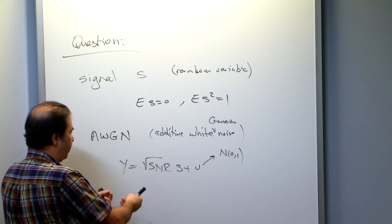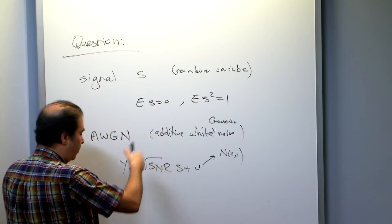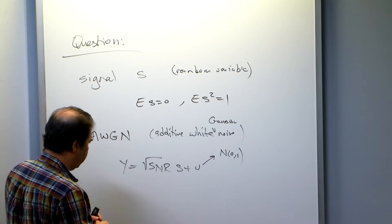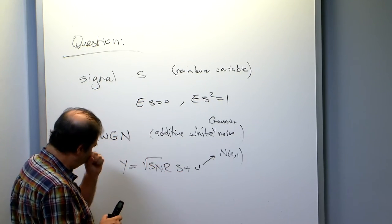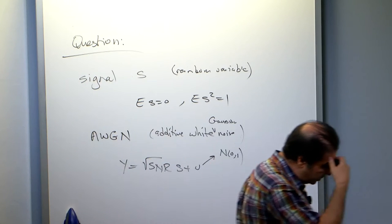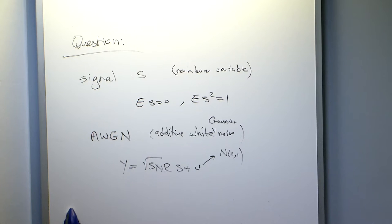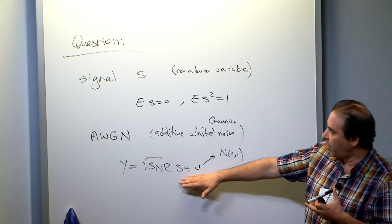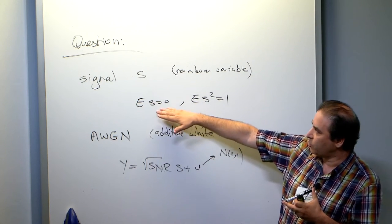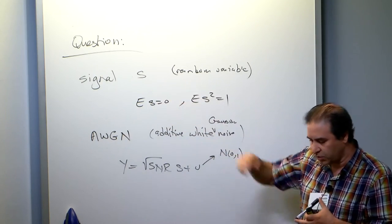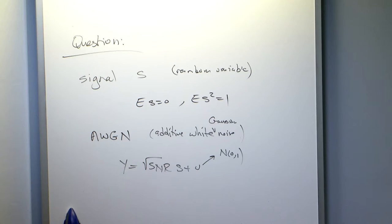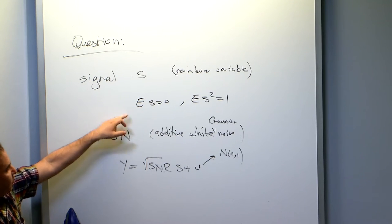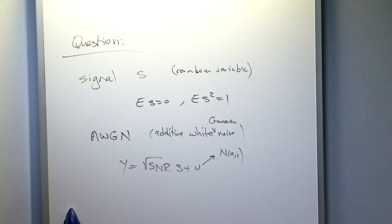The square root SNR signifies that this measurement has SNR given by some value — 10 dB, 5 dB, 2 dB, whatever. So you get a noisy version of the signal. Often in a control scenario, you might have a particular baud rate at which you're measuring the output of the plant — maybe every second you get an opportunity to look at the plant and get signal S. But your communication rate might be different.